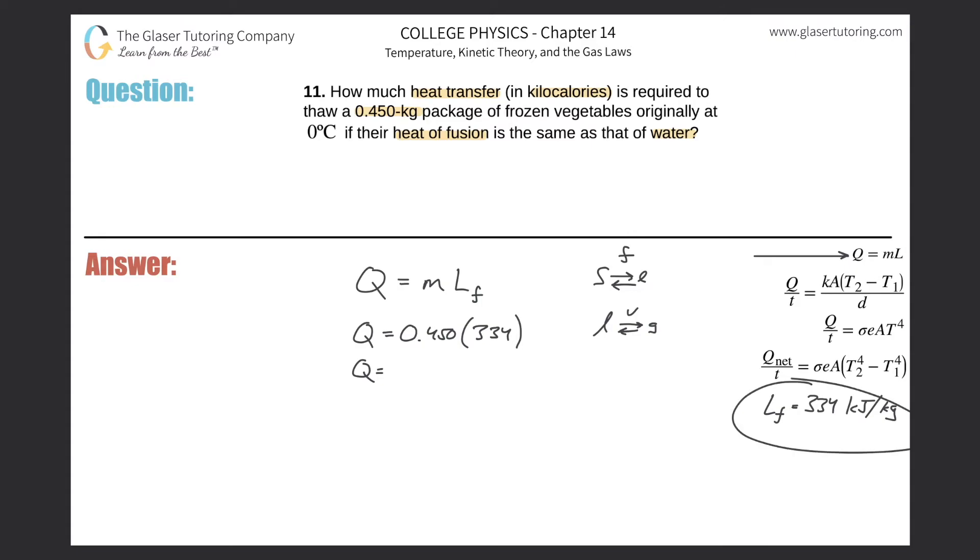By the way, this number comes from a table - either you'll have to memorize it or you'll have access to the table. The problem is simple here: 0.45 times 334 and we get about 150.3, so three sig figs would just be about 150.